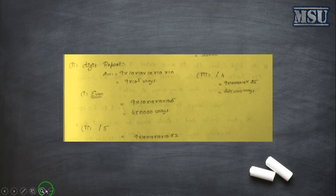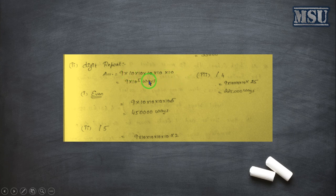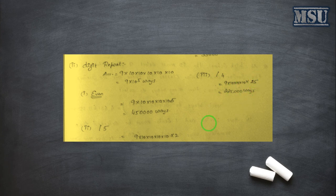If digits are repeating, it is a simpler problem. You can't have 0 at the first position, so there are 9 options, then all digits can be repeated, so 9 into 5 for even numbers — the last position has only 5 possibilities and can repeat. For divisible by 5, the last position has only 2 possibilities. For divisible by 4, the last 2 digits have 25 possible combinations — 00 to 96 — so there are 25 numbers possible. You can identify the answer from here.